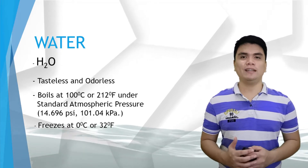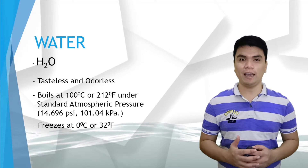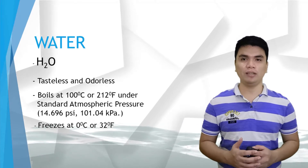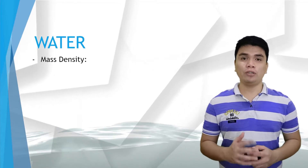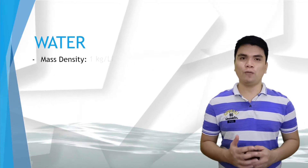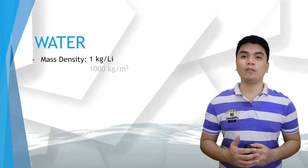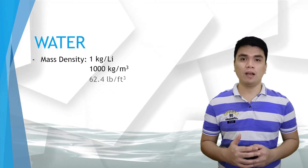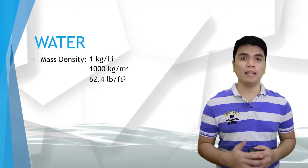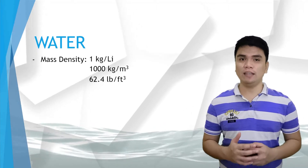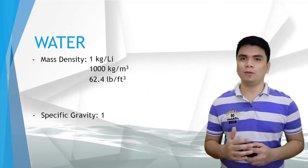The freezing point of water is at zero degrees Celsius or 32 degrees Fahrenheit in English unit. While the specific weight or the mass density of water is one kilogram per liter, 1,000 kilograms per cubic meter, or 62.4 pounds per cubic foot in English unit. While the specific gravity is one.